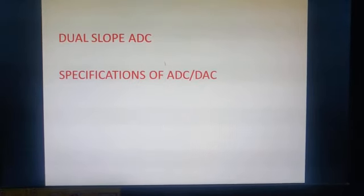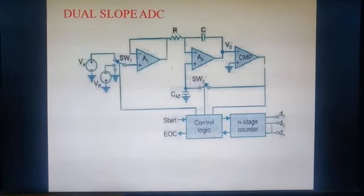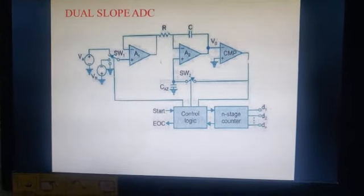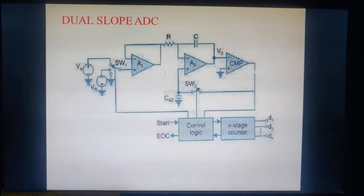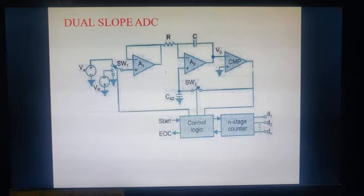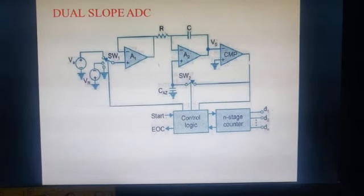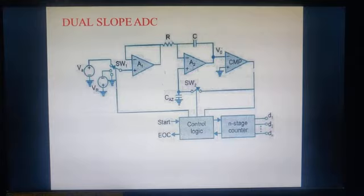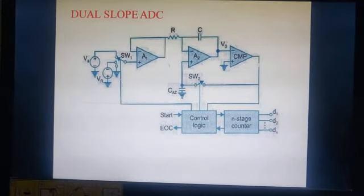As we know that the example for integrating type of ADC is nothing but dual slope ADC. So let us start with dual slope ADC. This is a block schematic of dual slope ADC. If we observe the block schematic, it consists of A1, A2, comparator, control logic and N stage counter. As it consists of two op-amps, it is called as dual. And it is also called as dual ramp converter. Here, A1 represents high input impedance buffer and A2 is an integrator circuit. And A2 is followed by a voltage comparator.